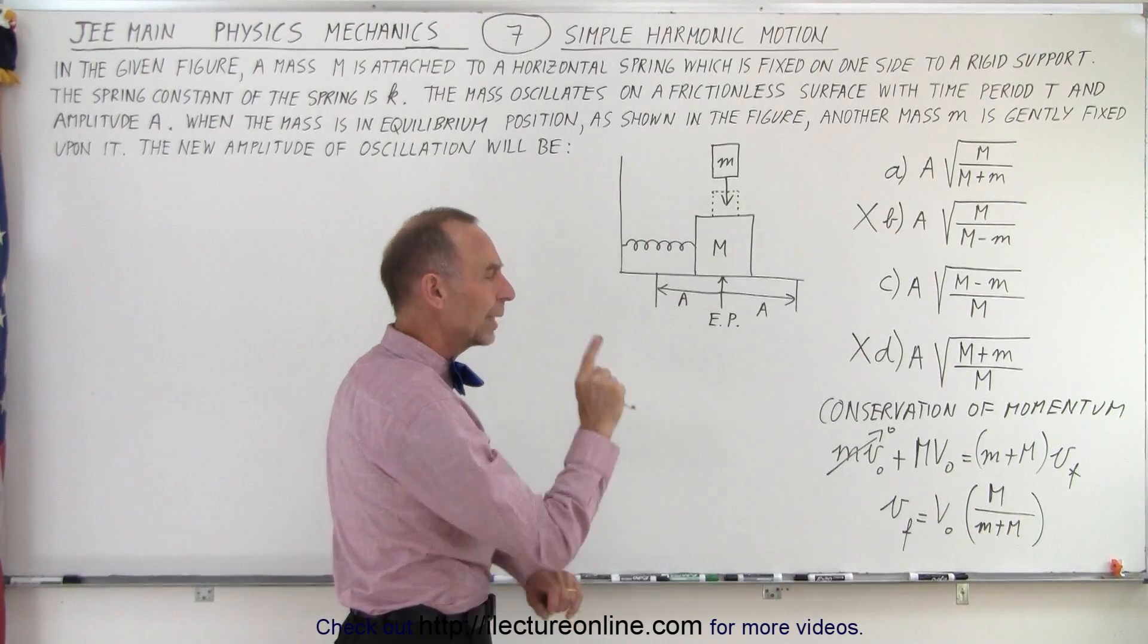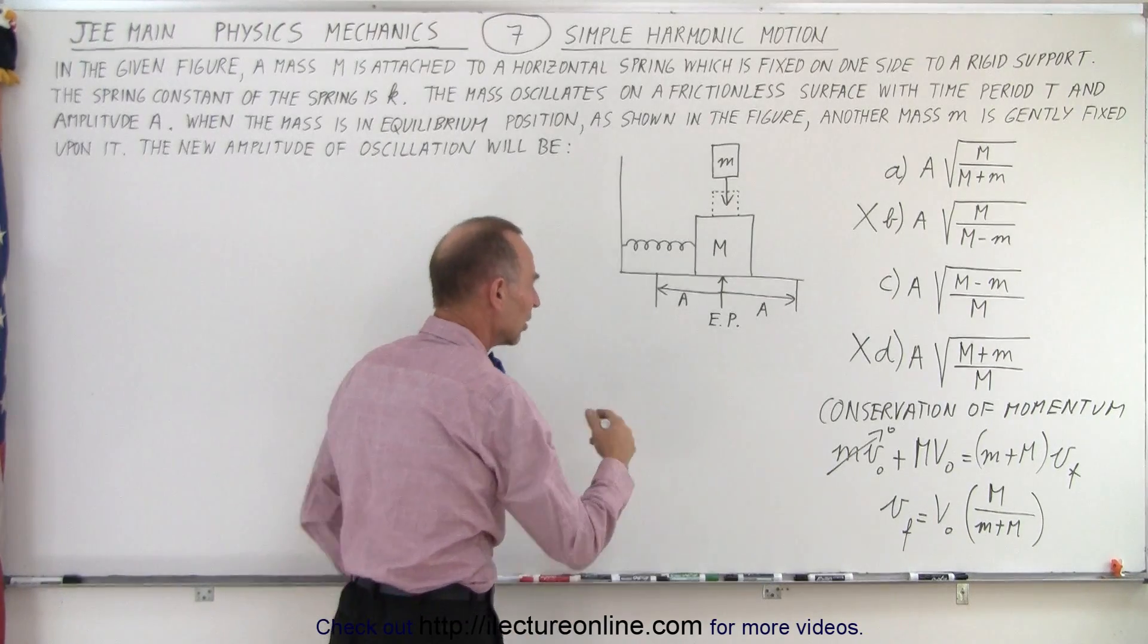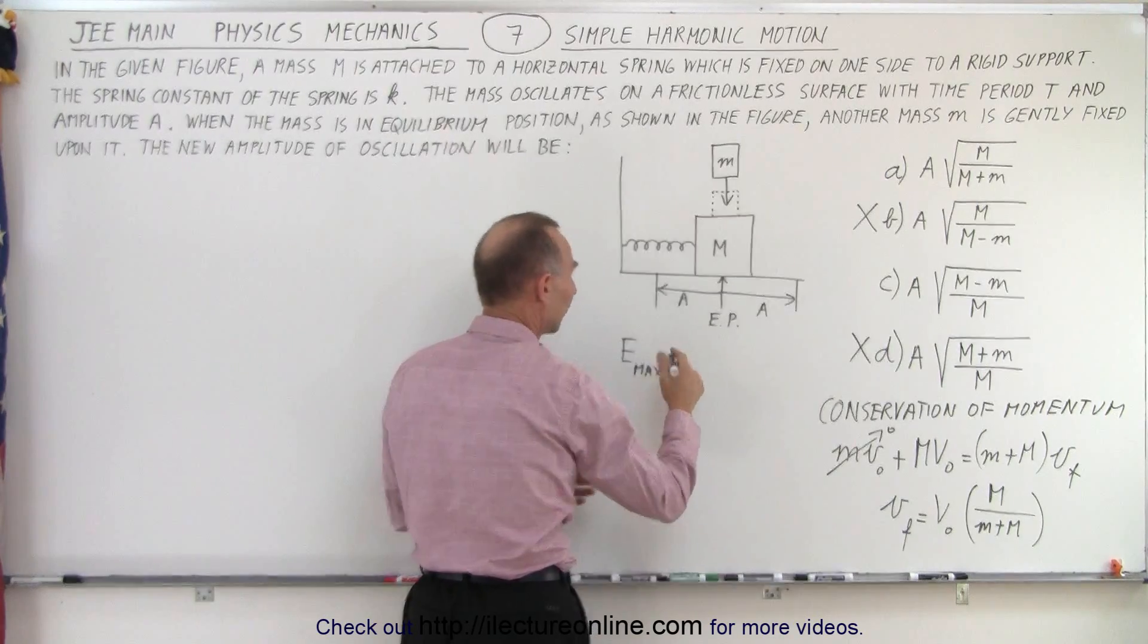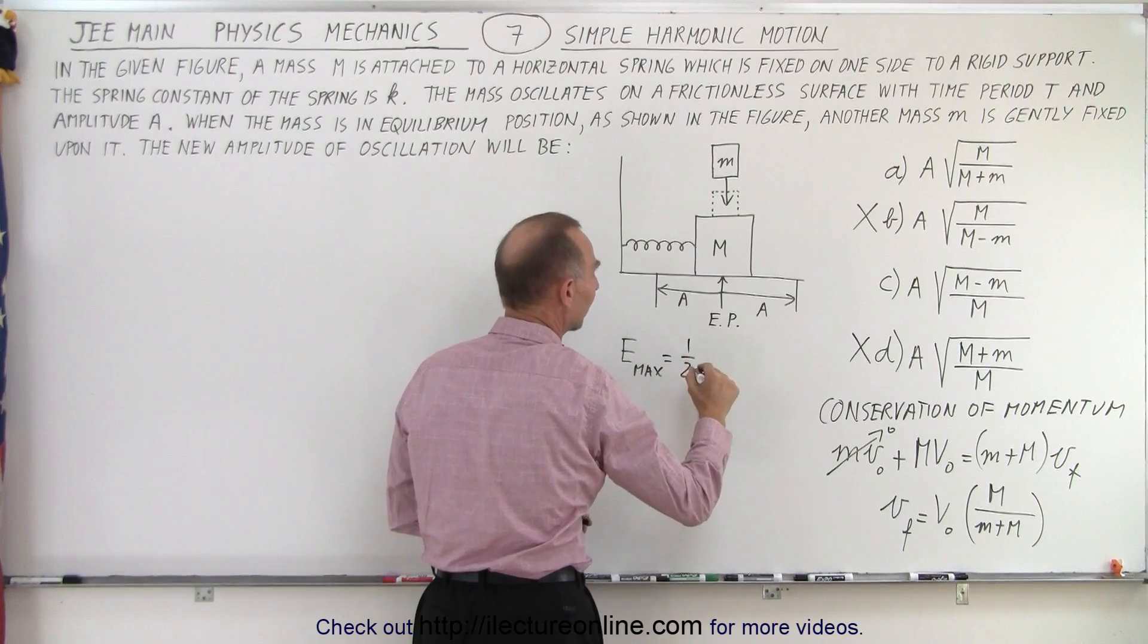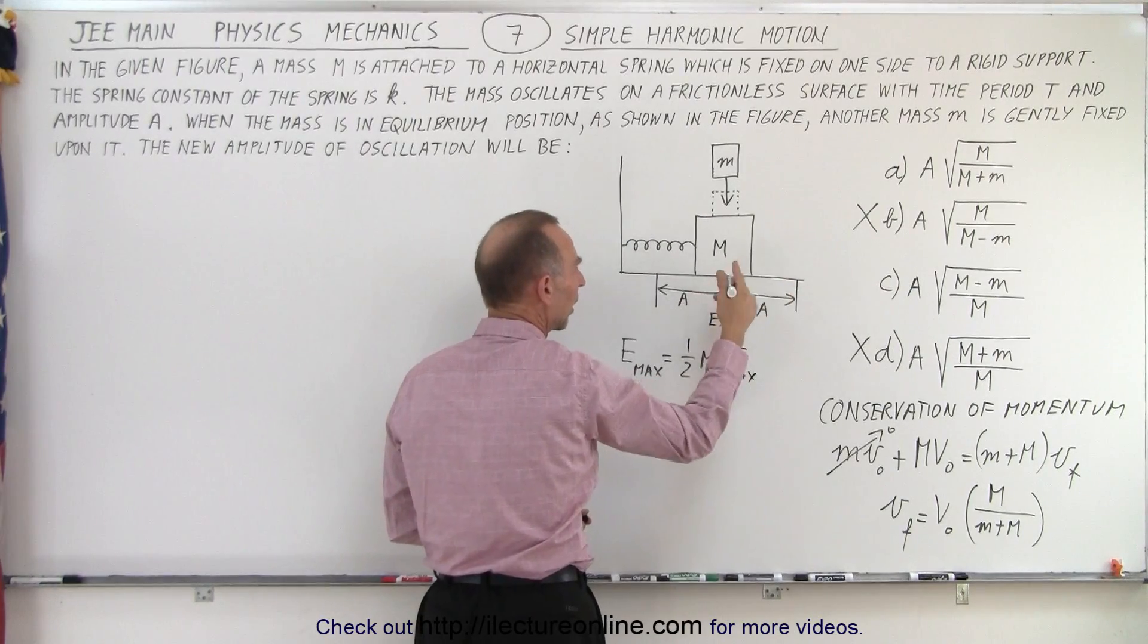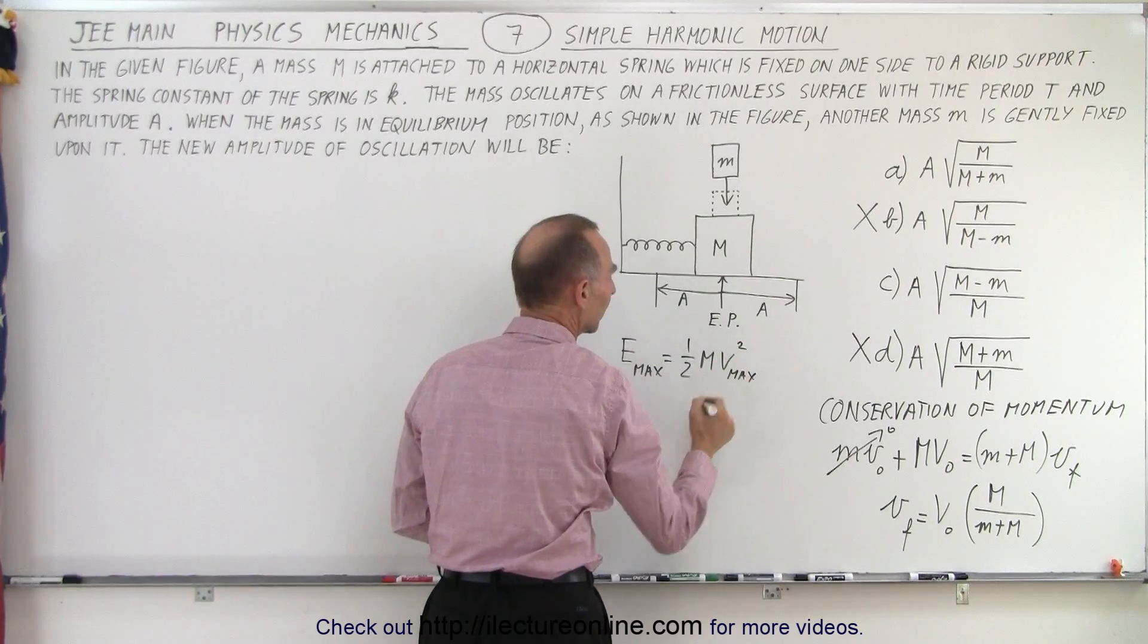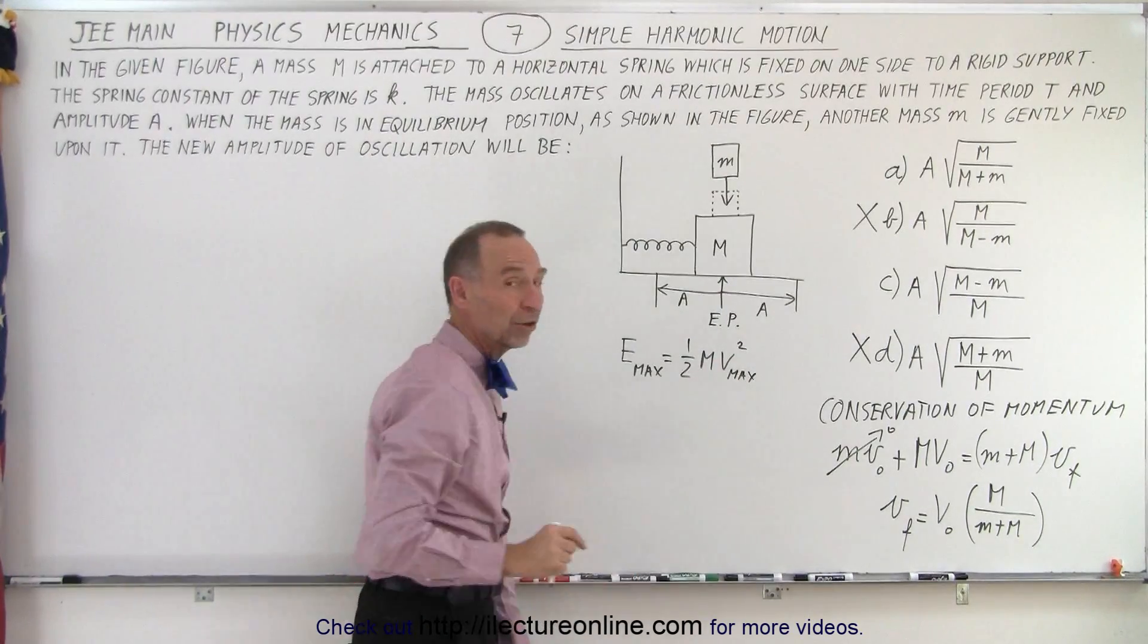Now, so what we can then say is that our energy, our maximum energy, E max, before we add the small block is going to be equal to one half the big M times V max squared. So that would be the velocity at the moment that the block goes to the equilibrium point, which is when you put the small mass on top of it. So that's the initial maximum energy.